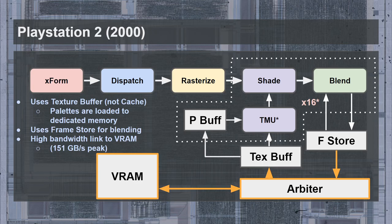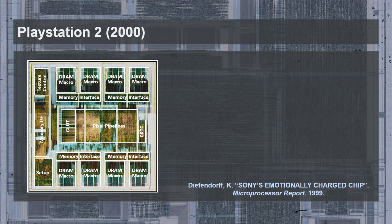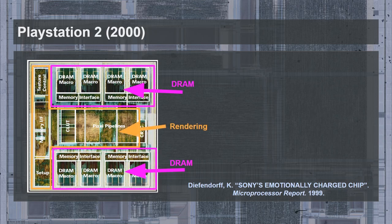To explain how this was done, we can turn to a die photo. This is an annotated die photo of the PlayStation 2 GPU from an article promoting the technology. The key feature to notice is that the DRAM is placed around the rendering portion of the GPU on the same die — in contrast to other GPUs of the time which used external DRAM for video memory. Placing the video memory inside the GPU allowed for extremely high interconnect bandwidth, though the disadvantages were more complex manufacturing, lower clock speeds, and VRAM capacity limited to only 4 MB shared between the frame buffer and textures.